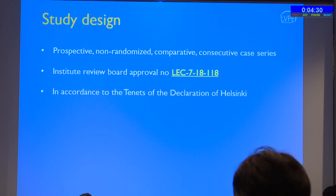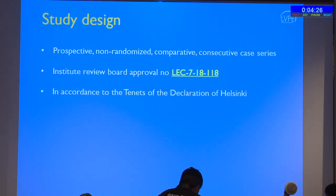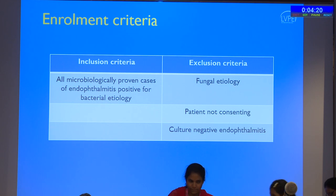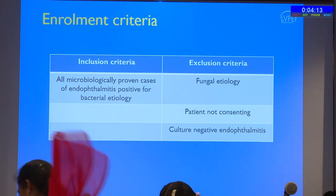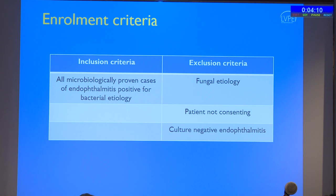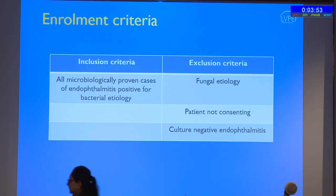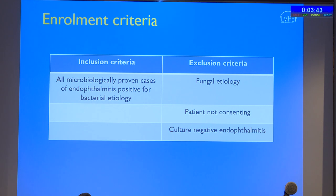This was a prospective, non-randomized, comparative, consecutive case series with appropriate IRB approval and in accordance with the Declaration of Helsinki. Inclusion criteria were all microbiologically proven cases of endophthalmitis positive for bacterial etiology — all culture-positive, all bacterial. Exclusion criteria were fungal etiology, patients not consenting, and culture-negative endophthalmitis. Culture-negative cases were excluded because organisms are required for this type of study.